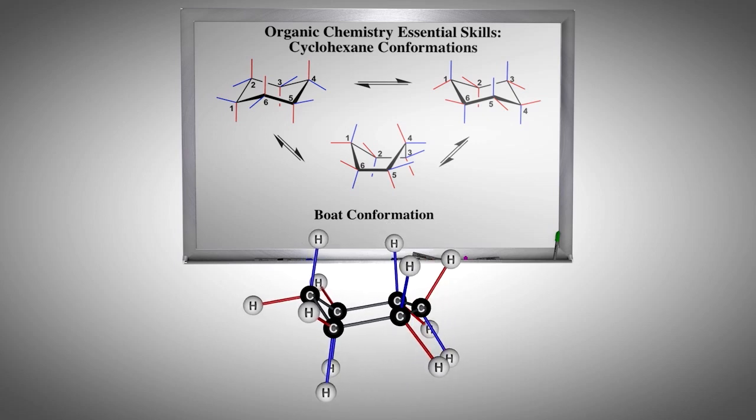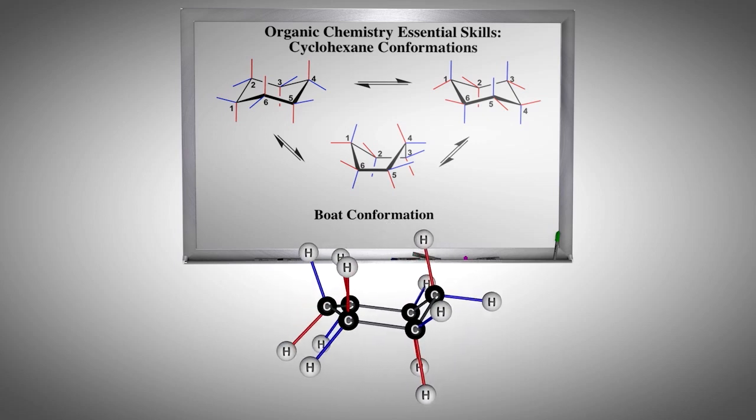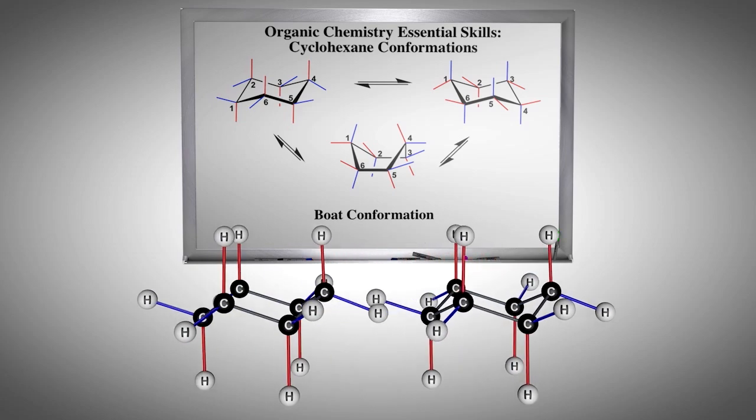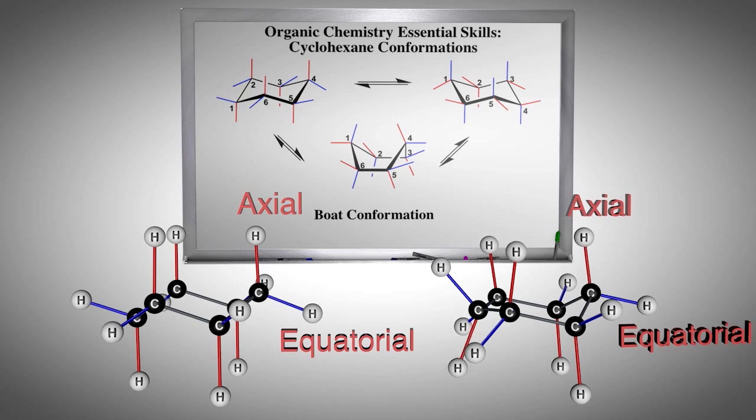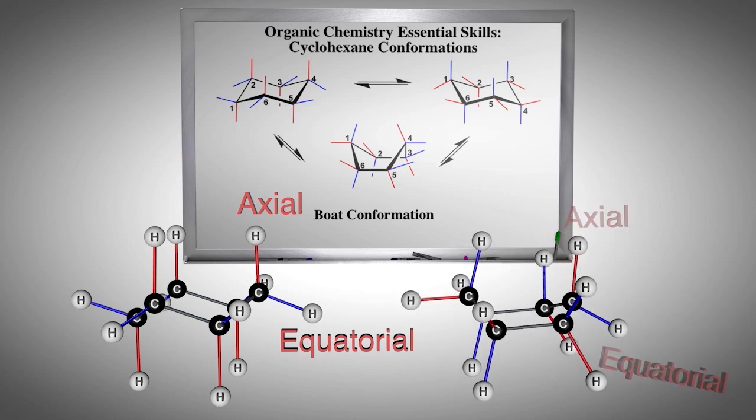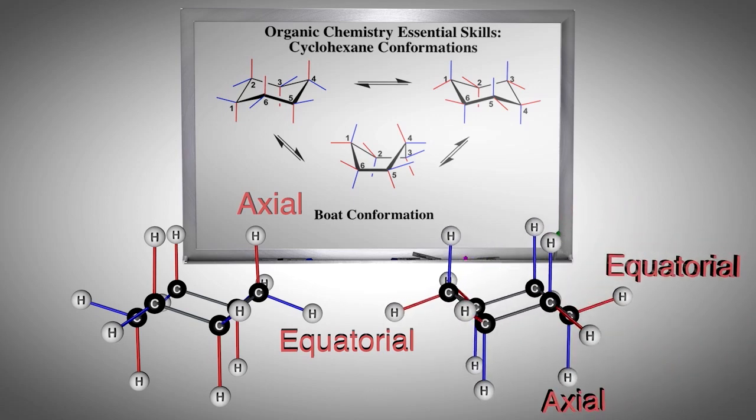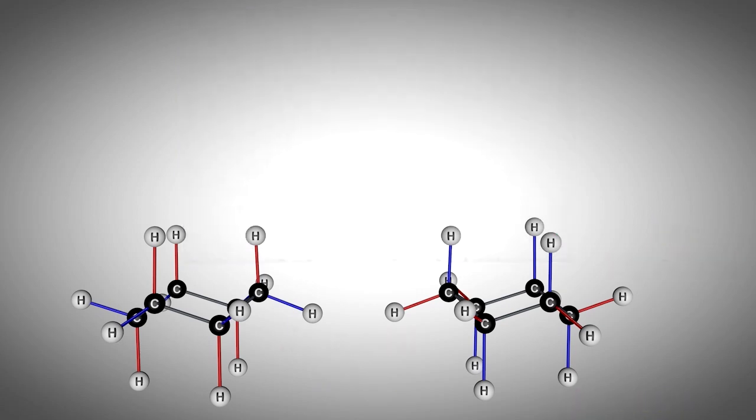There are two very important outcomes of this chair or ring inversion. First, notice that axial groups become equatorial, and the equatorial groups become axial. Second, if a group was up, it still remains up relative to the other group labeled down, which is also attached to the same carbon atom. It is worth your efforts to master drawing pairs of chairs.